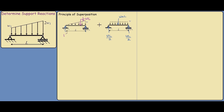To find the support reactions Fy1 and Fy2, we will use the summation of moments equals zero. Taking moments about this point, with anti-clockwise as positive, Fy2 times L gives a positive moment, and this point load gives a negative moment: negative half times W times L. This point load acts two-thirds away from our moment point, because for a triangular load the centroid is two-thirds away from the smallest end. So the lever arm is two-thirds of L, and this equals zero.